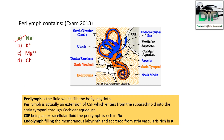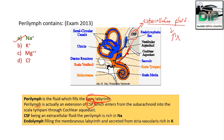Perilymph is the fluid which fills the bony labyrinth. Perilymph is actually an extension of CSF. From the subarachnoid space, the CSF drains through the cochlear duct into the Scala tympani. So perilymph is a continuation of CSF. CSF is an extracellular fluid, and extracellular fluid is rich in sodium. So perilymph contains more sodium and less potassium.